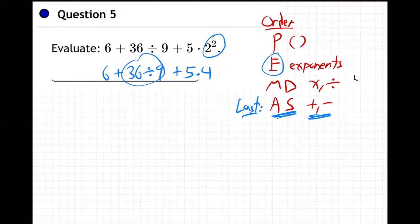And then do this multiplying and dividing, M and D. So 36 divided by 9 is 4. 4 times 5 is 20.